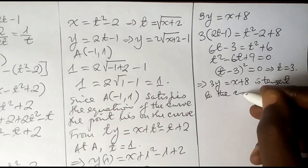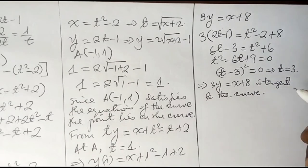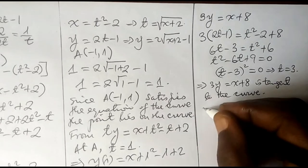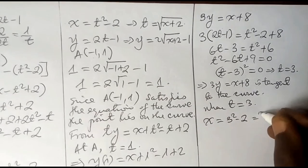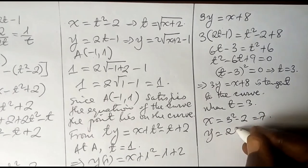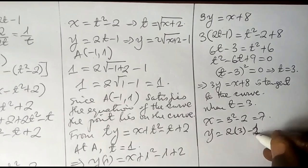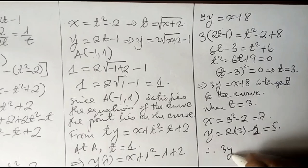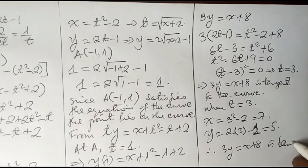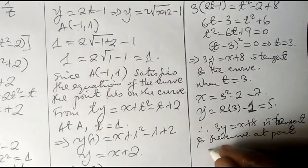Since t equals 3 is a unique solution, the point of contact is unique. Substituting t equals 3 into the parametric equations: x equals 3 squared minus 2 equals 7, and y equals 2 times 3 minus 2 equals... giving y equals 5. Therefore 3y equals x plus 8 is tangent to the curve at the point (7, 5).